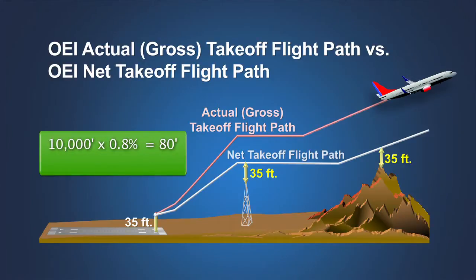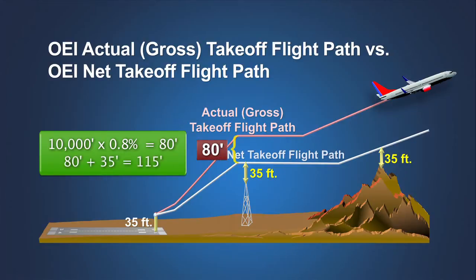For example, if a two-engine airplane is 10,000 feet beyond the start of the takeoff flight path at 35 feet during the second segment climb, the difference between the gross height and the net height will be 0.8% of 10,000 feet, or 80 feet. Thus, the requirement that the net takeoff flight path must clear the obstacle by 35 feet means the airplane will actually clear the obstacle by as much as 115 feet, though operational variables may reduce this margin.